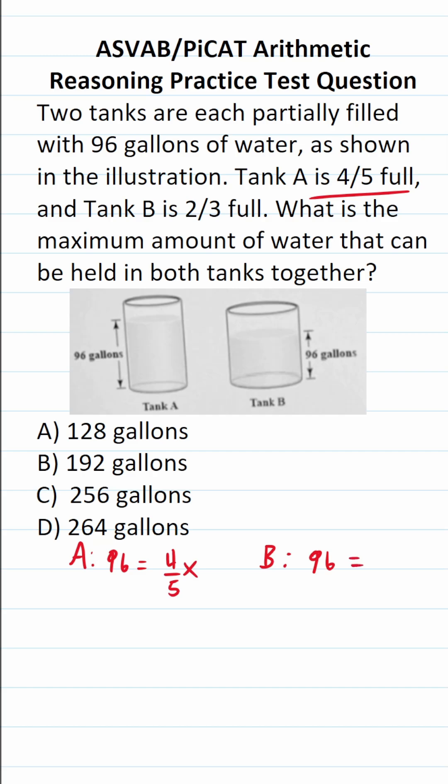Likewise, tank B has 96 gallons of water. That's equal to two-thirds of its maximum capacity, which I'm going to call X. So we have to solve both of these equations for X.